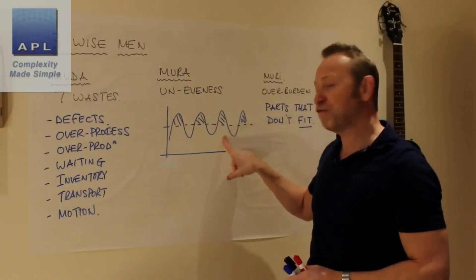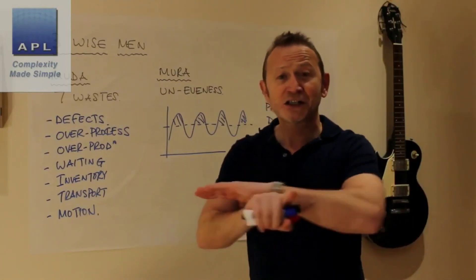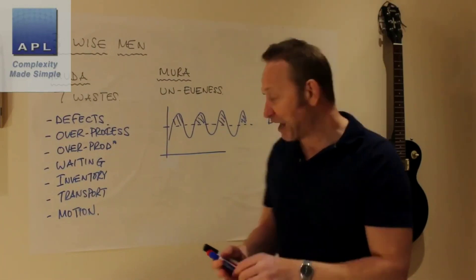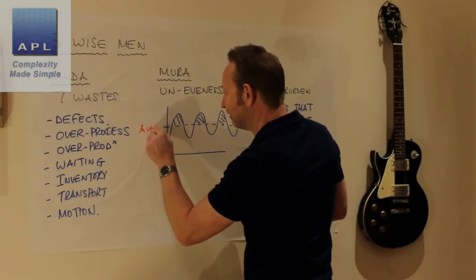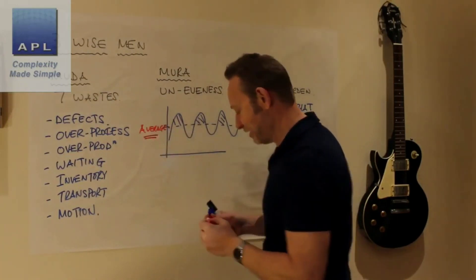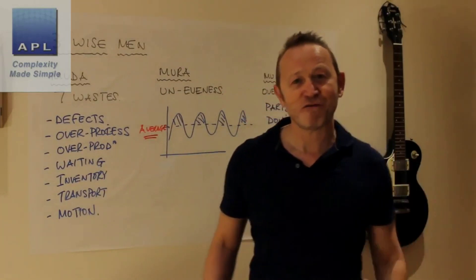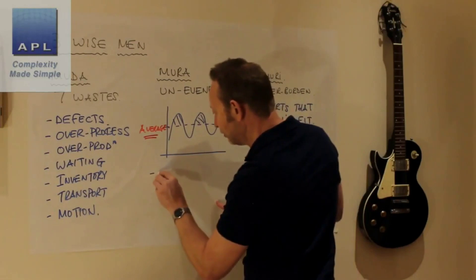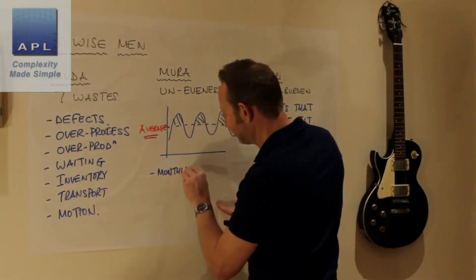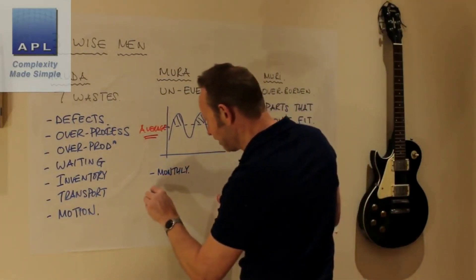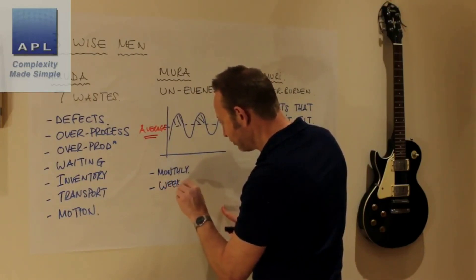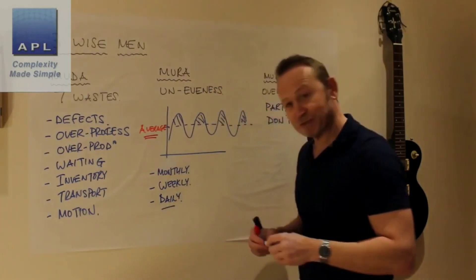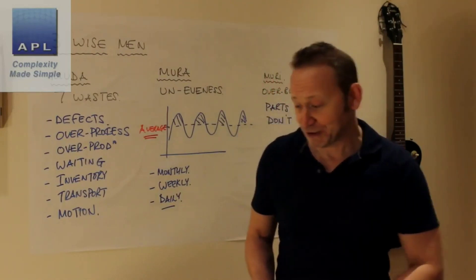In the book, the first thing he does is eliminate overburden, then he flattens demand — making it completely even through the manufacturing process. It's one of the simplest things you can do: calculate the average demand for each product, put that into a plan, and make the average every single day. Initially try to do it monthly — the same quantity every month. Then break it down to weekly, and finally to the same quantity daily.